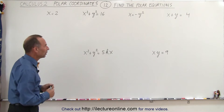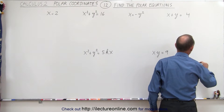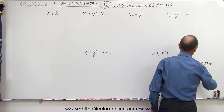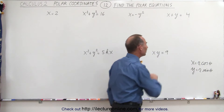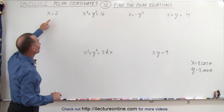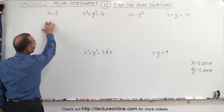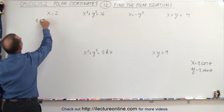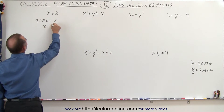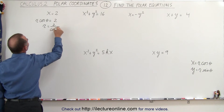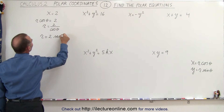This is the method we use to convert them. We have the general equations where x is defined as r times the cosine of theta, and y is defined as r times the sine of theta. Using that, we can simply replace every x and y and see what we end up with. In the first equation, we end up with r times the cosine of theta is equal to 2, which means r is equal to 2 divided by the cosine of theta, or r is equal to 2 times the secant of theta.